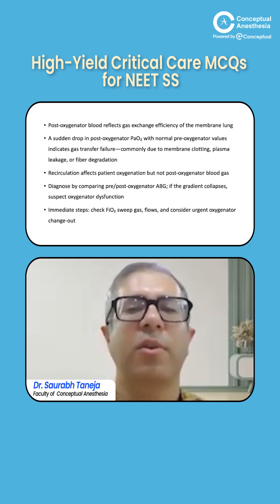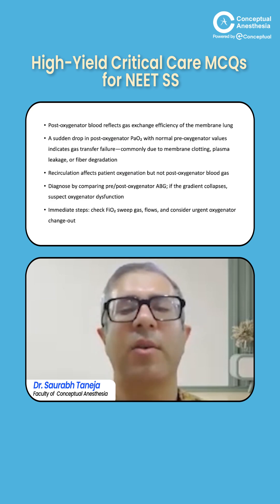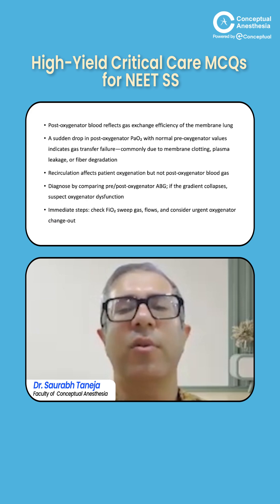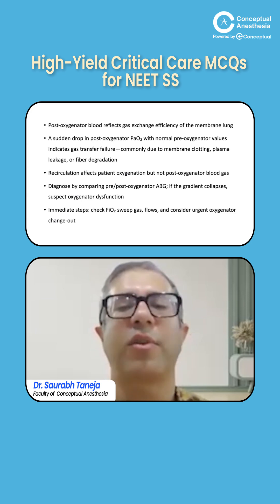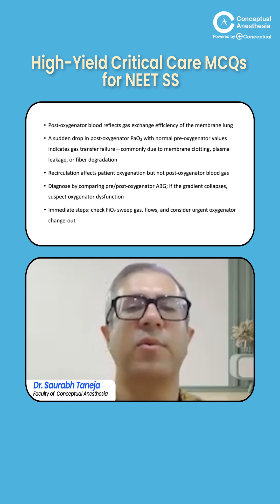Oxygenator failure can be due to membrane clotting, plasma leakage, or fibrin degradation. We have to think about increasing the FiO2, optimizing the patient, and ultimately changing the oxygenator. This is diagnosed by comparing pre- and post-oxygenator blood gas analysis, which is done very frequently in patients on VB ECMO.